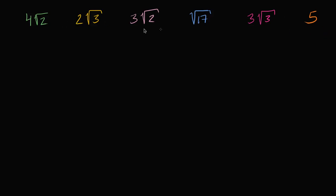I have six numbers here, and you see that five of them are irrational — they involve the square root of a non-perfect square. Our goal in this video is, without a calculator, to sort these numbers from least to greatest. Pause this video and see if you can do that.